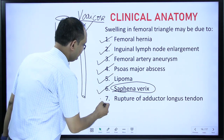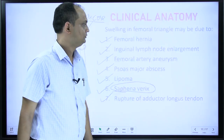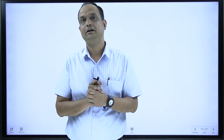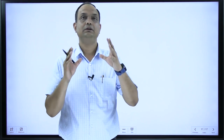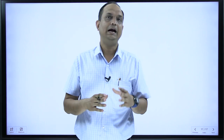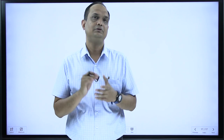Lastly, rupture of the tendon of adductor longus muscle can also present as a swelling. At the end of this class, you now have an idea of the boundaries of the femoral triangle, why the femoral triangle floor is gutter-shaped, what are the contents of the femoral triangle, how the triangle is formed, and what important swellings can be present in this triangle. This is all for today's class, thank you.